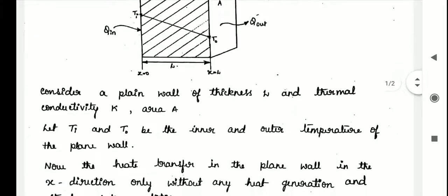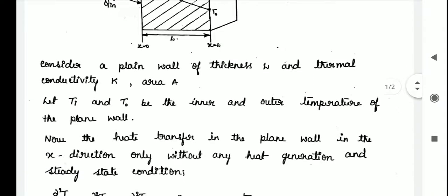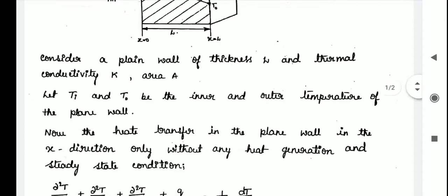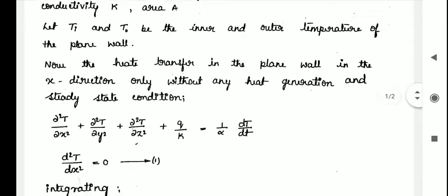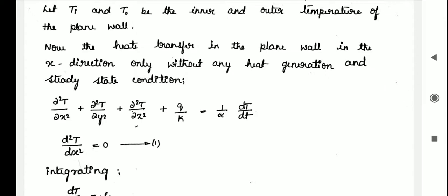Heat transfer in the plane wall occurs in the x-direction only. Considering no heat generation and steady-state conditions, the general heat equation — d²T/dx² + d²T/dy² + d²T/dz² + q/k = (1/α)(dT/dt) — simplifies to d²T/dx² = 0, labeled as equation 1.